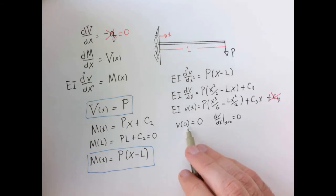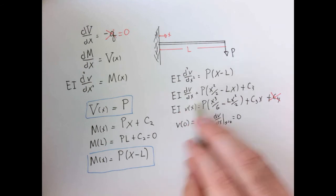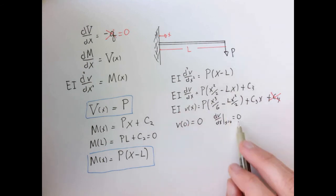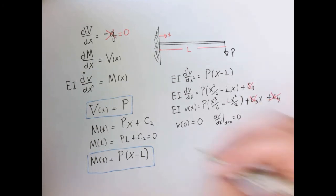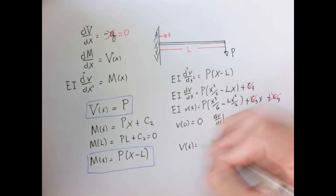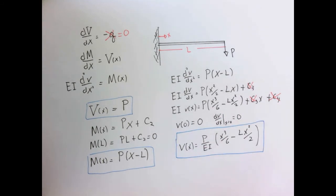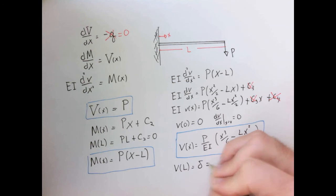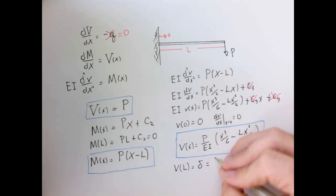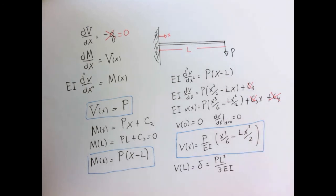Just like in the previous example, substituting x equals zero into the deflection and slope expressions causes all terms to vanish, telling us C4 equals zero and C3 also needs to be zero. So there we have it — the final result for the deflection as a function of x. Evaluating at x equals L gives us the maximum deflection delta equals PL³ over 3EI. Another useful expression.